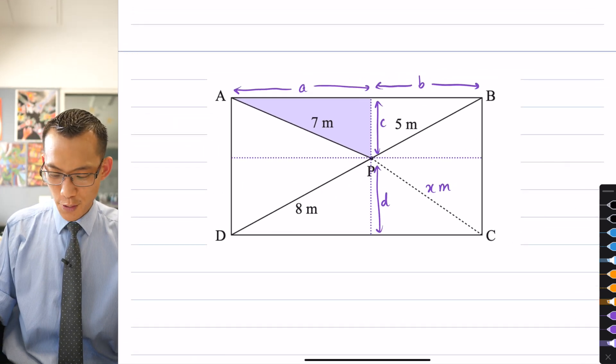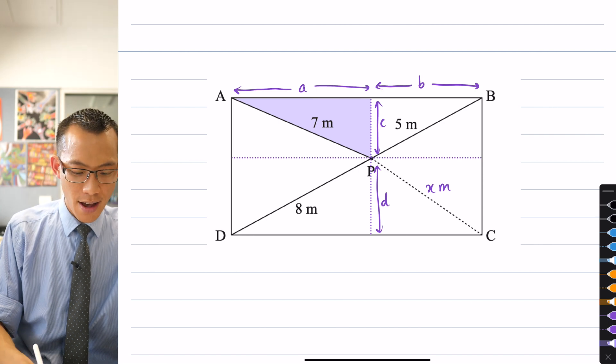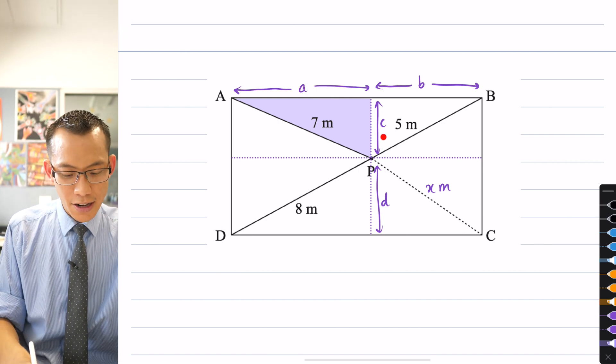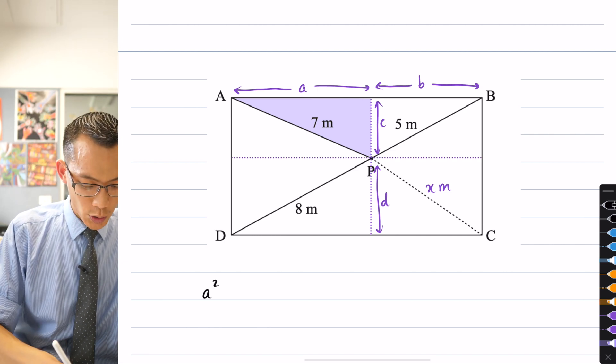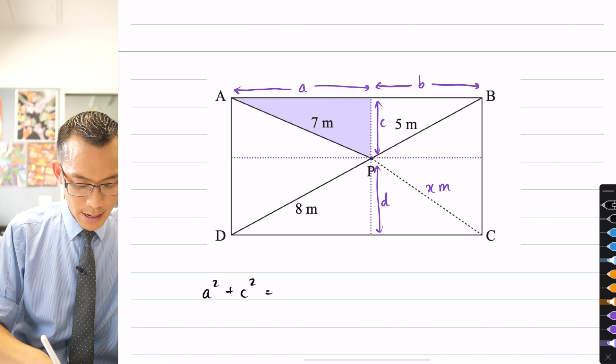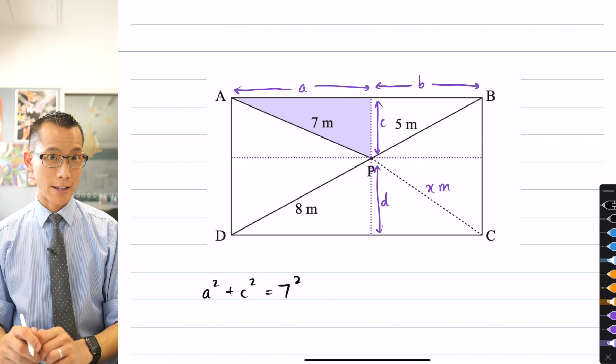All right, so having a look at this first right-angled triangle here, you can see I've got an unknown here A, an unknown here C, but the hypotenuse is 7. So I can say off of that A² + C² = 7². Okay, so far so good.